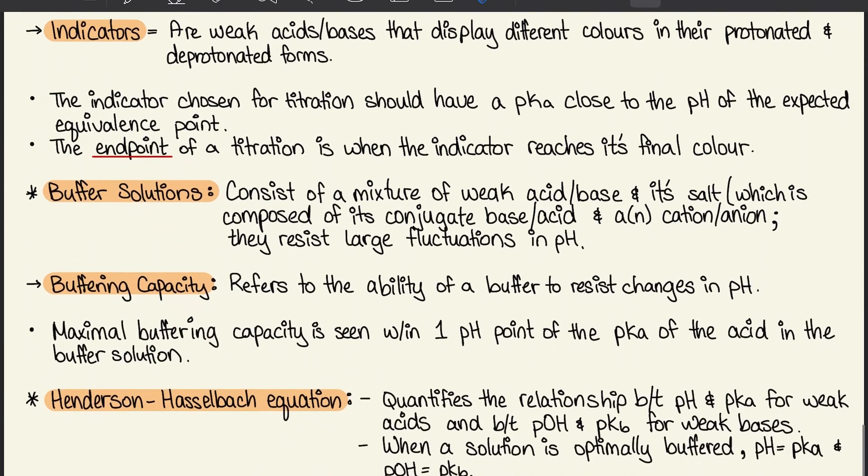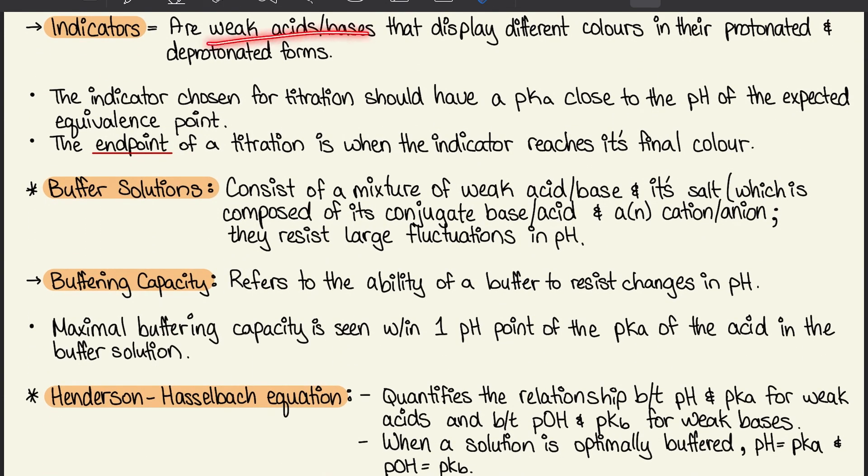Then we have indicators, which are weak acids and bases that display different colors in their protonated or deprotonated forms. The indicators chosen for titration should have a pKa that's close to the pH of the expected equivalence point.